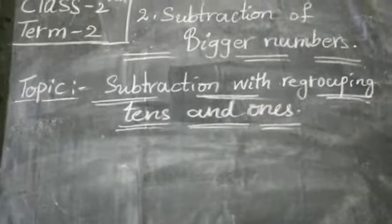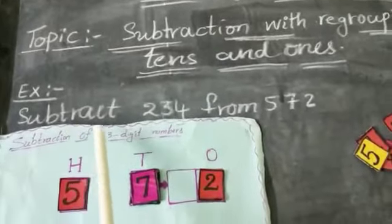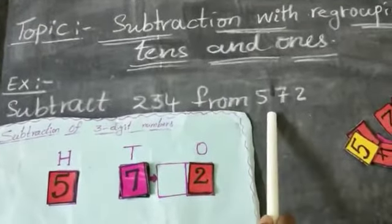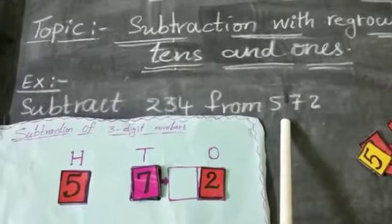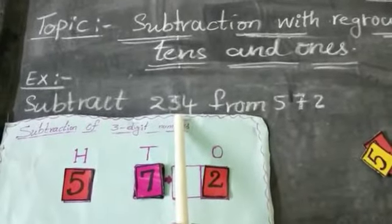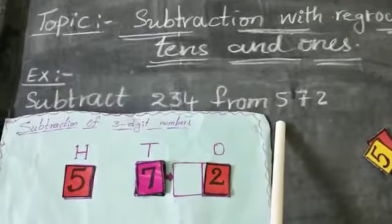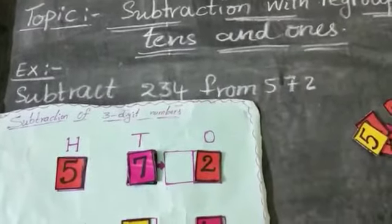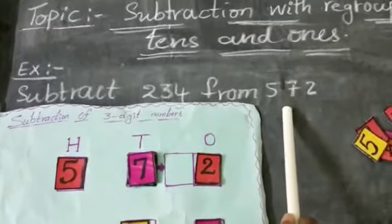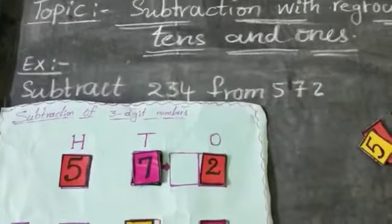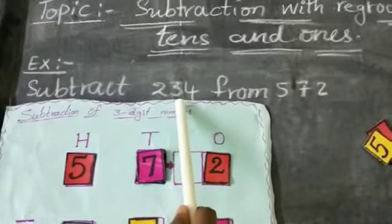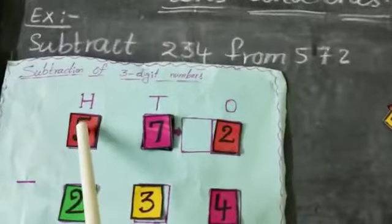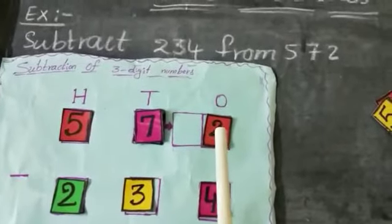Okay children, look at this example: subtract 234 from 572. Tell me children, between 234 and 572, which number is big? 572 is big. Which number is small? 234 is small. 572 means 5 hundreds, 7 tens, 2 ones.